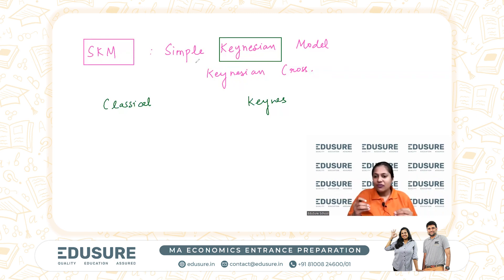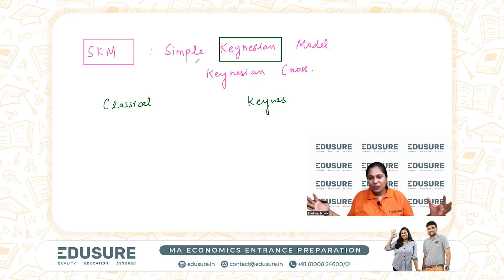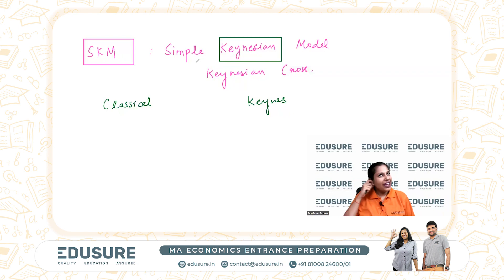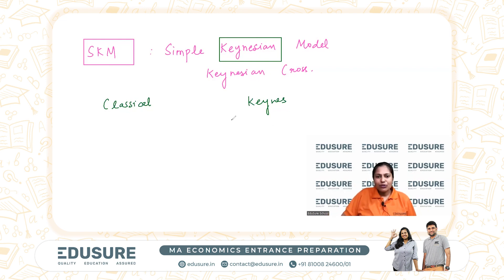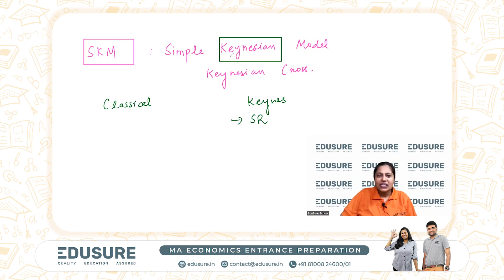But the point is that you cannot wait for the long run — it's too long a period of time. If there is unemployment for a very long period, people are going to go hungry, people are going to die. Waiting for the long run is not really a solution, and that's what Keynes said: in the long run, we're all dead. You need policies which work in the short run so you can come out of the crisis faster.